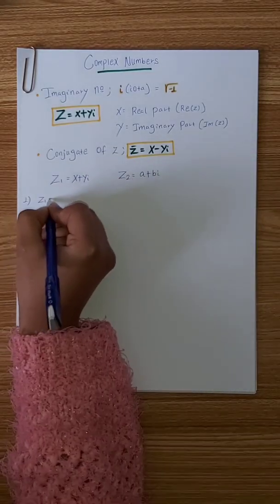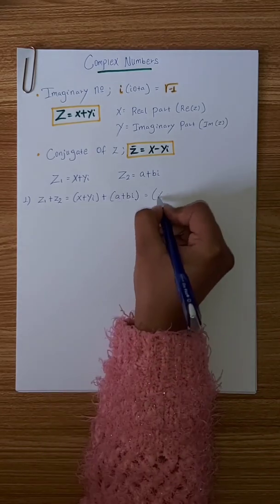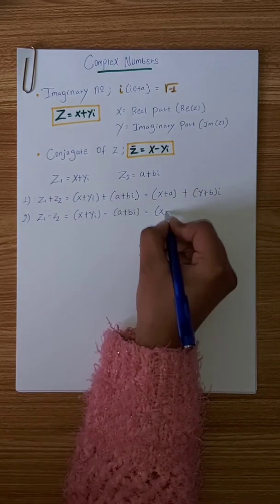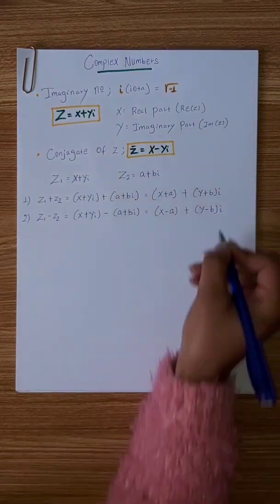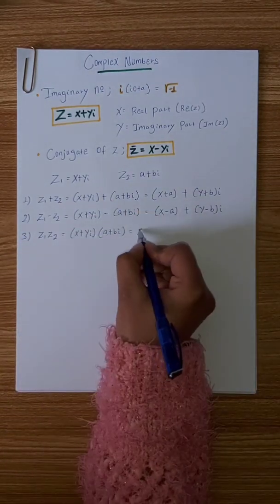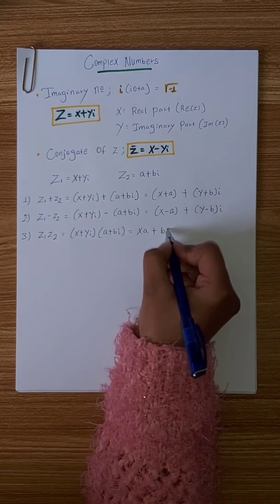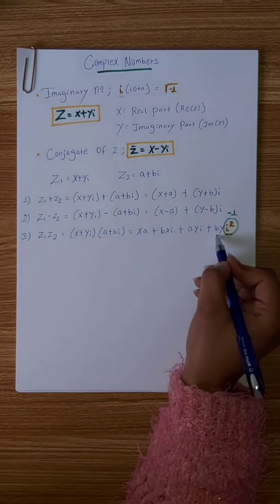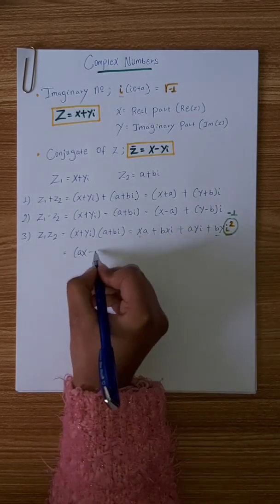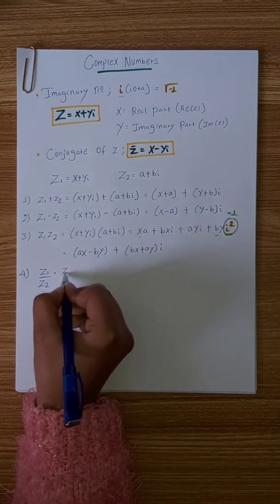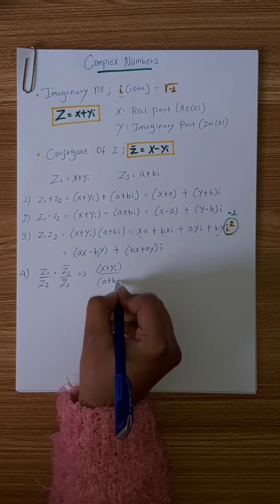For complex numbers, we can define the summation, the difference, and the multiplication. The imaginary unit i is equal to the square root of negative 1.